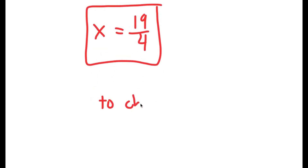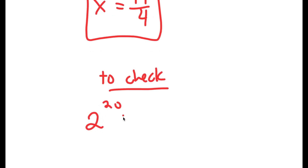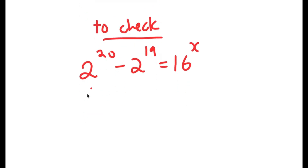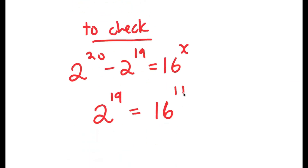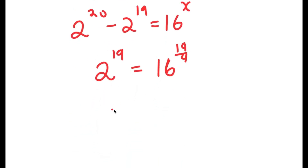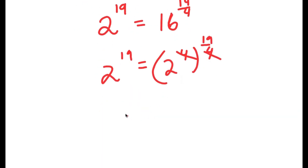Now, to check: my original equation was 2 to the power of 20 minus 2 to the power of 19 is equal to 16 to the power of x. We already know that 2 to the power of 20 minus 2 to the power of 19 equals 2 to the power of 19. So we get 2 to the power of 19 is equal to 16 to the power of 19 over 4. Since 16 is 2 to the power of 4, I have 2 to the power of 4 to the power of 19 over 4, and the 4s cancel, giving 2 to the power of 19 equals 2 to the power of 19.